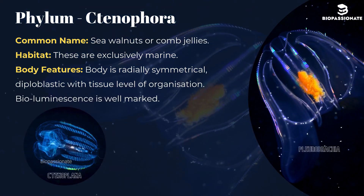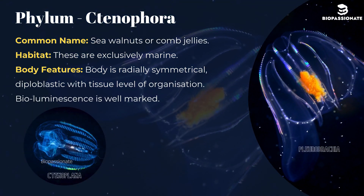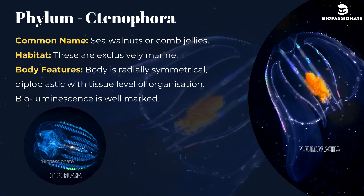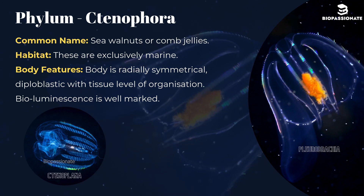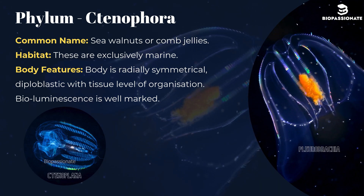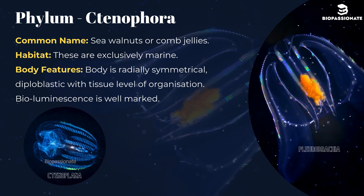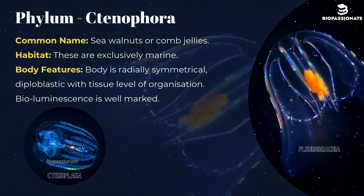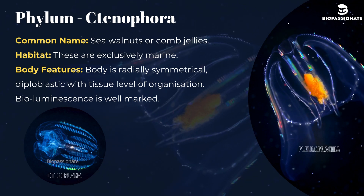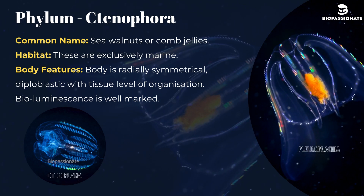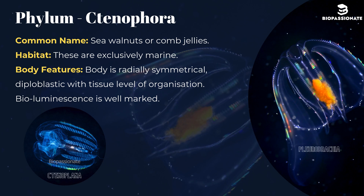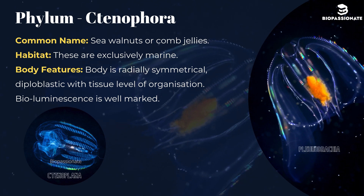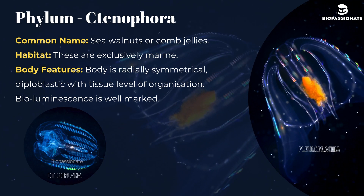Phylum Ctenophora, commonly known as sea walnuts or comb jellies. These are exclusively marine. Body is radially symmetrical, diploblastic with tissue level of organization. Bioluminescence is well-marked. Common examples are Ctenoplana and Pleurobrachia.